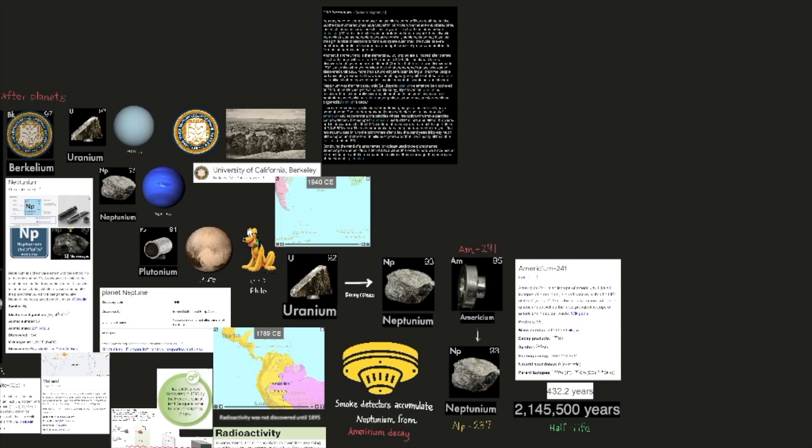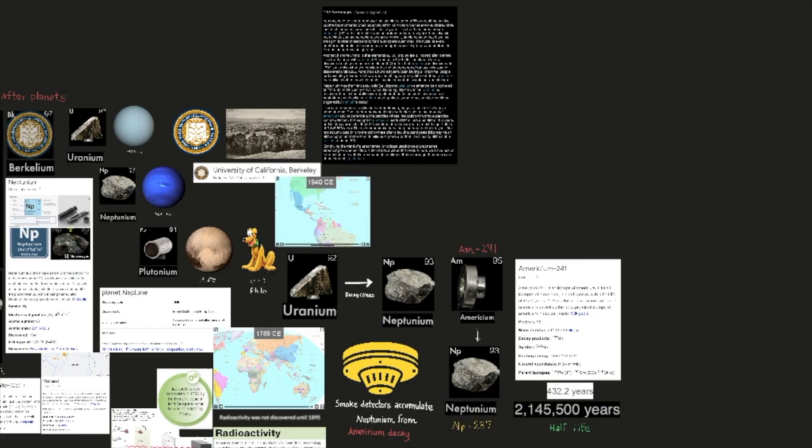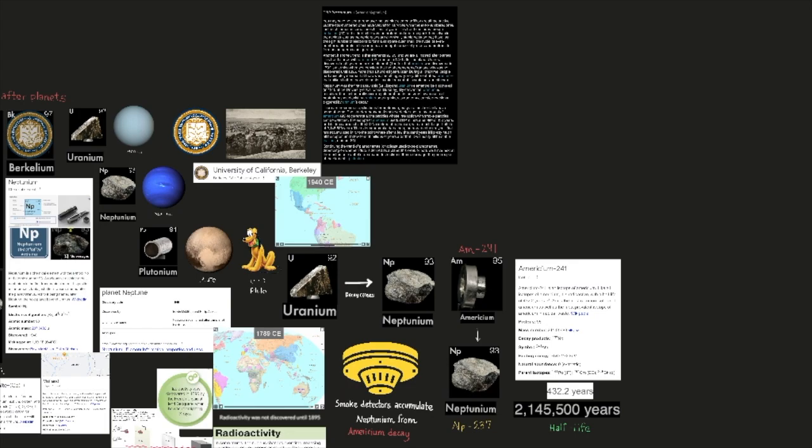Neptunium was the first transuranic, beyond uranium, element to be discovered in 1940 at the University of California Berkeley, UC Berkeley. By convention, uranium is considered the last naturally occurring element, but in fact, very tiny amounts of neptunium should exist in uranium-bearing minerals due to nuclear side reactions triggered by uranium's decay.